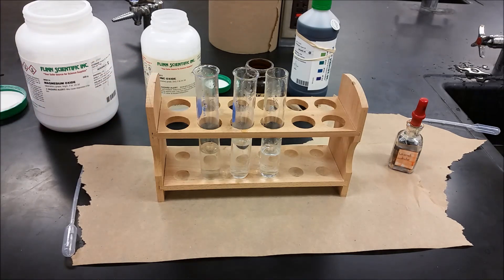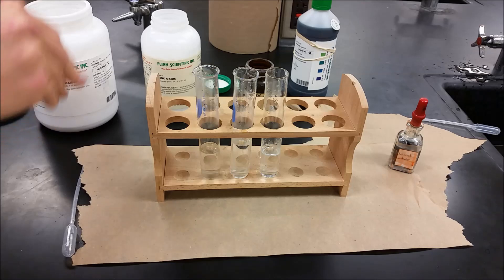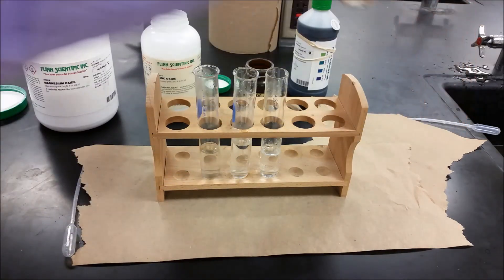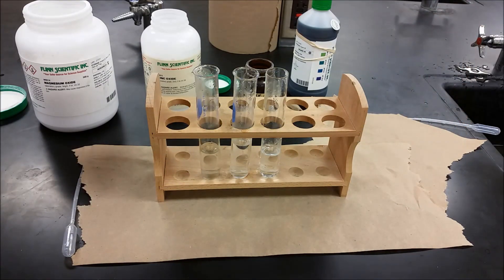So what we're looking at is as we move across the periodic table from the left to the staircase to the right, what happens to the basicity or acidity of the oxide when it reacts with water. Now in order to read that, we're going to put a little bit of universal indicator in each of these.